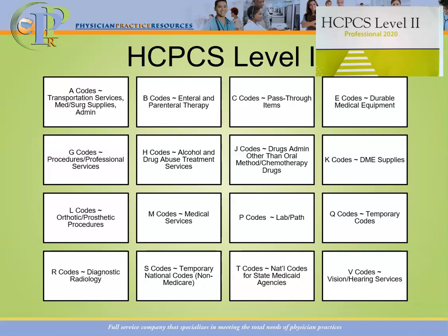Letter E is for durable medical equipment — walkers, wheelchairs, canes, things like that. Letter G codes are temporary procedures and professional services. Here you're going to see codes that do not have an option in CPT but do have an option in HCPCS. Letter H is for behavioral health and substance abuse treatment services. Letter J has two types of codes: drugs other than chemotherapy, and chemotherapy drugs.